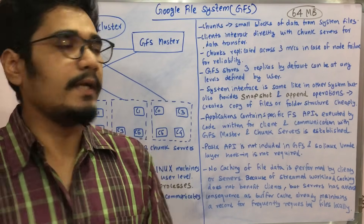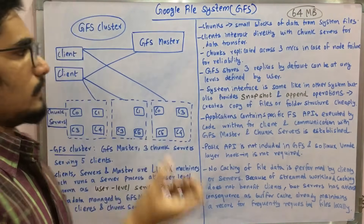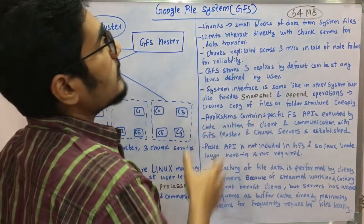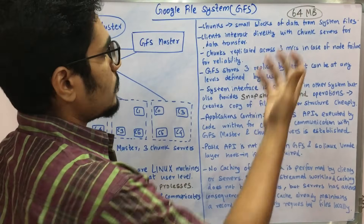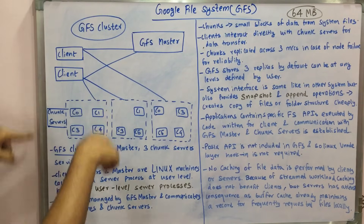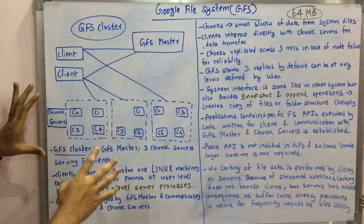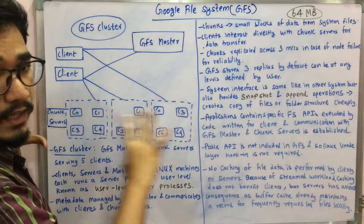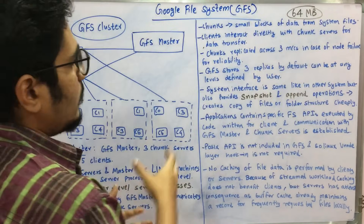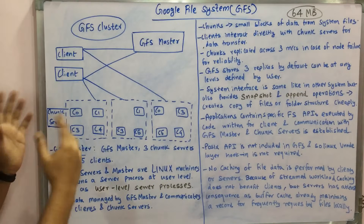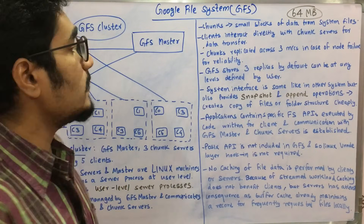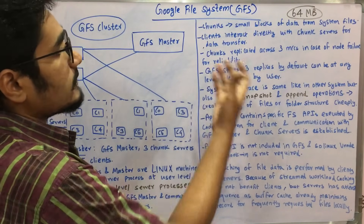Chunk servers are replicated across the entire cluster, and clients interact directly with the chunk servers for data transfer. You can see the clients inside the dotted server boxes — three different replicas of servers with small clients inside. Direct communication happens between the client and the server in GFS, with chunks replicated across three machines.